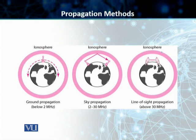Another important topic is the propagation methods for unguided media. Unlike guided signals that are limited by the physical boundaries of the guided media, in the case of unguided media the signals can travel from source to destination in several ways — they can travel along the ground, propagate via the sky, and there is also line of sight propagation.